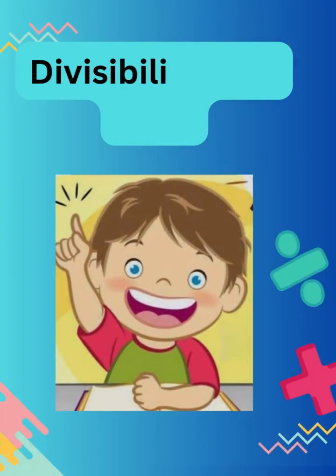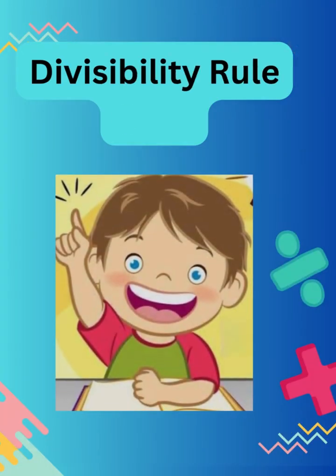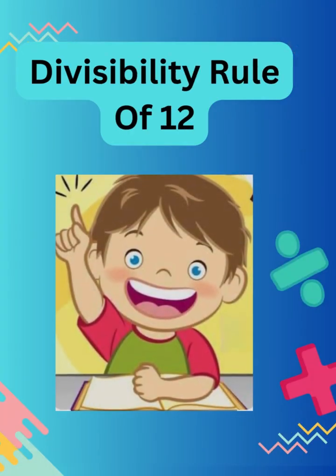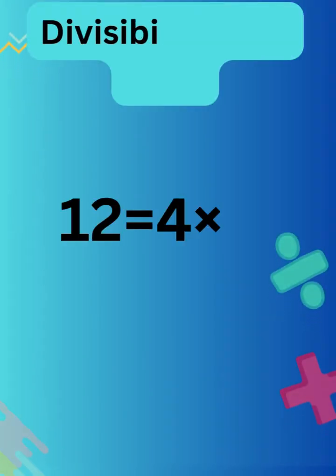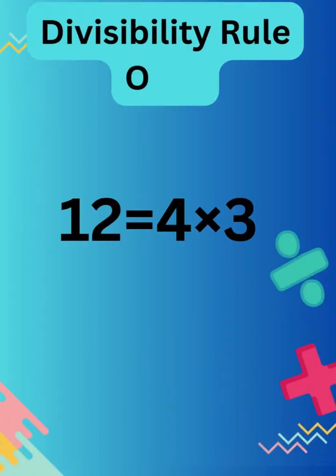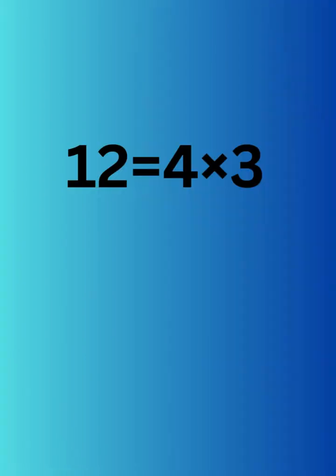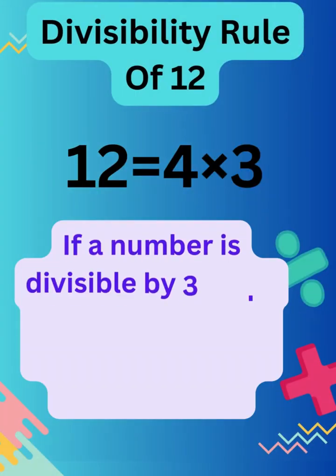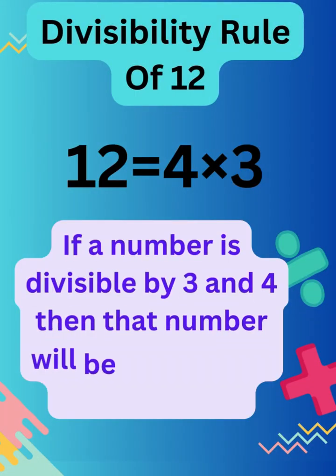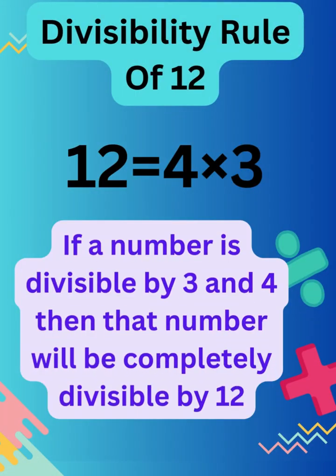Divisibility rule of 12. 12 is equal to 4 multiplied by 3. If a number is divisible by both 3 and 4, then that number is divisible by 12.